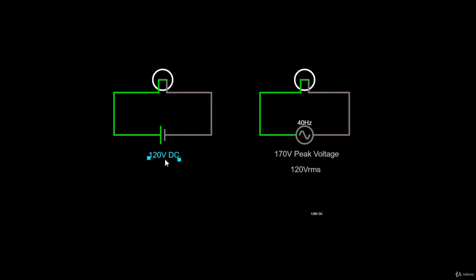So even though the voltage of this AC power source is higher than the DC power source, the effective power that it gives to this light bulb is the same with the power given by this 120V DC power source.